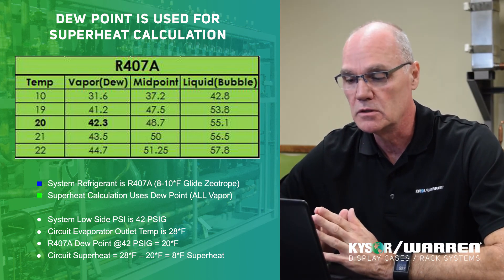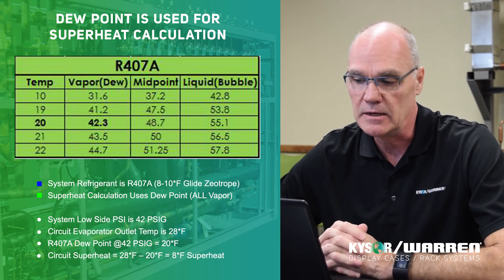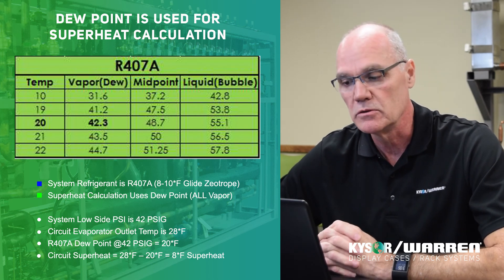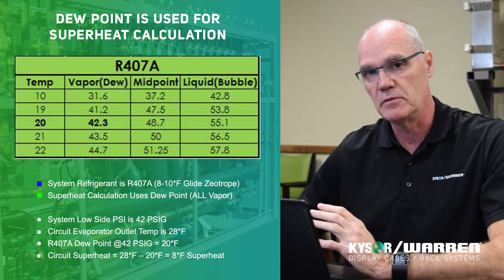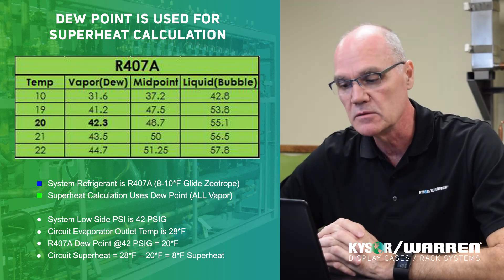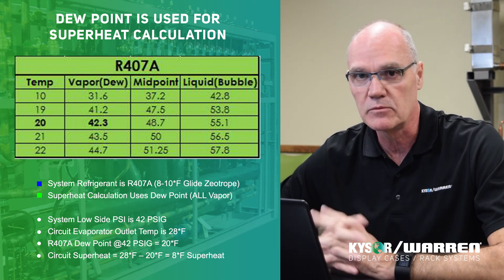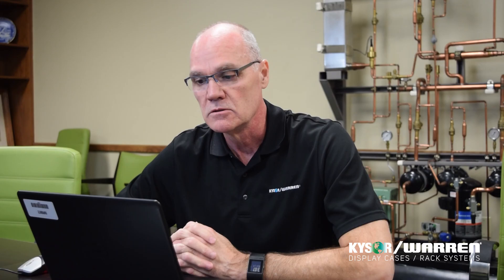If you set your superheat and set the system up on bubble point, you're going to have a very unhappy system and an unhappy customer. You're either going to be maintaining temperatures well above the set point, or most likely — depending on how you adjust your superheat — you'll have a system with flood back, potentially damaging your compressor. So that's a quick tip on high glide refrigerants, how they differ from zero or low glide refrigerants, and what that means when setting superheat in an evaporator. Thank you.